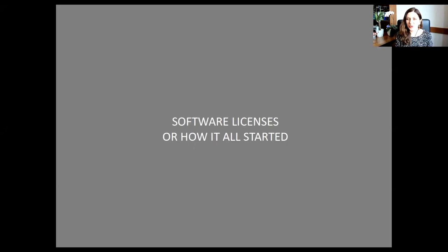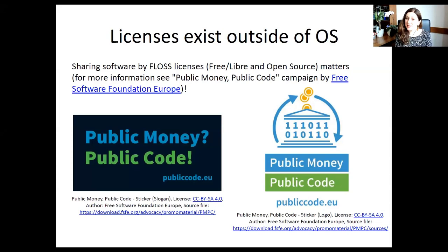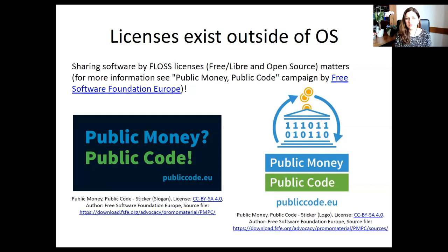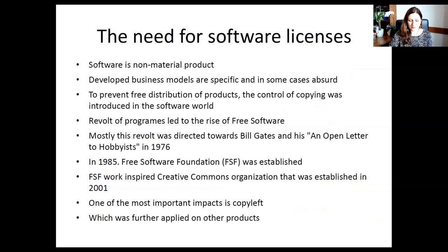To explain how software licenses started: CC licenses were created inspired by free software. Sharing software has a longer history. One initiative is European — 'Public Money, Public Code' — which says: if you use public money, taxpayers should see the source code in return. The campaign is by the Free Software Foundation Europe. This is basically how it all started, somewhere in the 1960s and 70s.